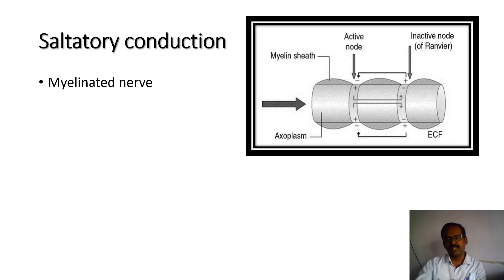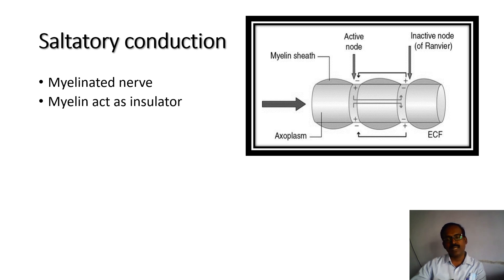Myelinated nerve fibers are surrounded by the myelin sheath. Myelin sheath is an insulator. Current flow through the myelin sheath is negligible.